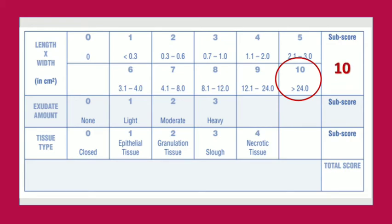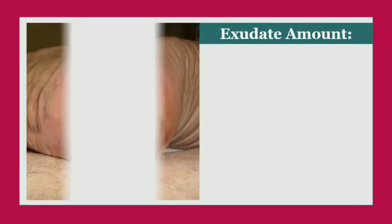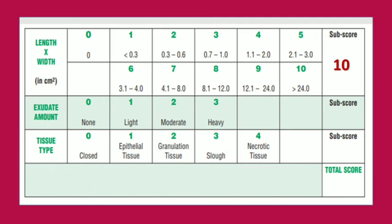The second parameter is exudate amount. Estimate the amount of exudate present after removal of the dressing and before applying any topical agent to the ulcer. You estimate it as none, light, moderate, or heavy. In the example, there is granulation tissue surrounding the area and the exudate is not too heavy or too light, so it is marked as moderate, giving a subscore of 2.